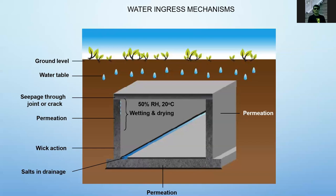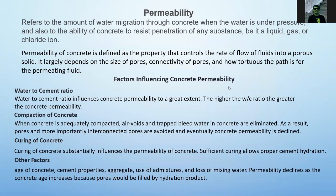If there is presence of salt in the drainage, there will be presence of water. Permeability refers to the amount of water migration through concrete when the water is under pressure, and also the ability of concrete to resist penetration of any substance — liquid, gas, or chloride ion. Permeability of concrete is defined as the property that controls the rate of flow of fluids into a porous solid. It largely depends on the size of the pores, connectivity of pores, and how tortuous the path is for the permeating fluid.